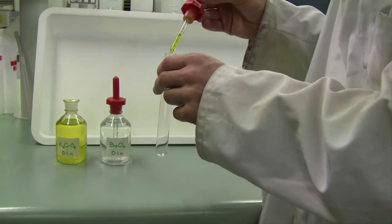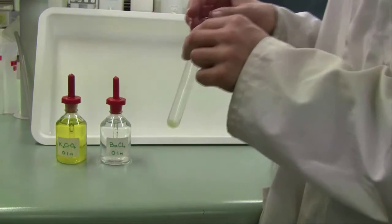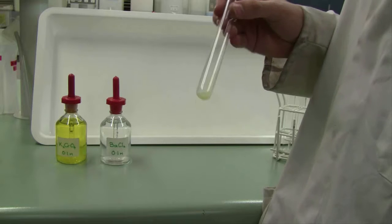When you make your observations, a good observation is one that will mean something to you. If you read your observation a week later, you'd know exactly what it was you were looking at. So here we can see I have a pale yellow milky precipitate.